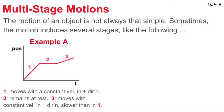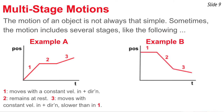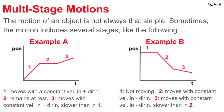That summarizes example A. In example B, we again see a three-stage motion. The first line is horizontal — zero velocity, object not moving. Lines two and three both slope negatively, meaning the object is moving to the left with a negative velocity. Line two has a bigger (steeper) negative slope than line three, so stage two is faster and stage three is slower, both moving left at constant velocity.